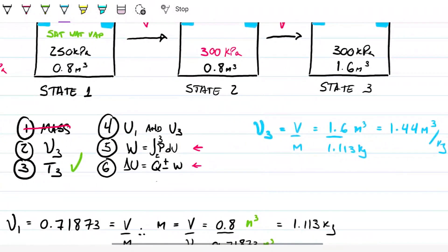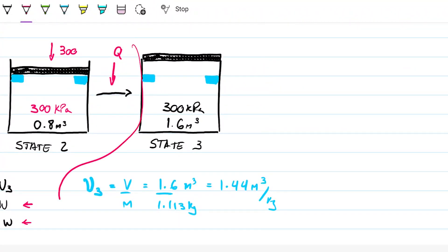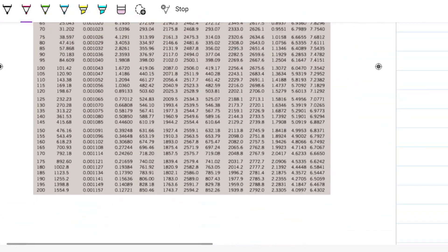So that's the second thermodynamic property I need for my second state. And now I can completely define it. So let's find out what's going on. I'm going to go to the pressure table at 300 and I'm going to look for a specific volume of 1.44. See where that falls.